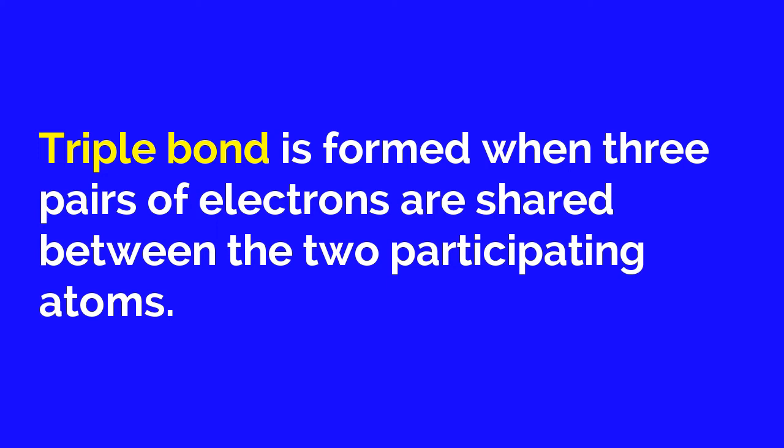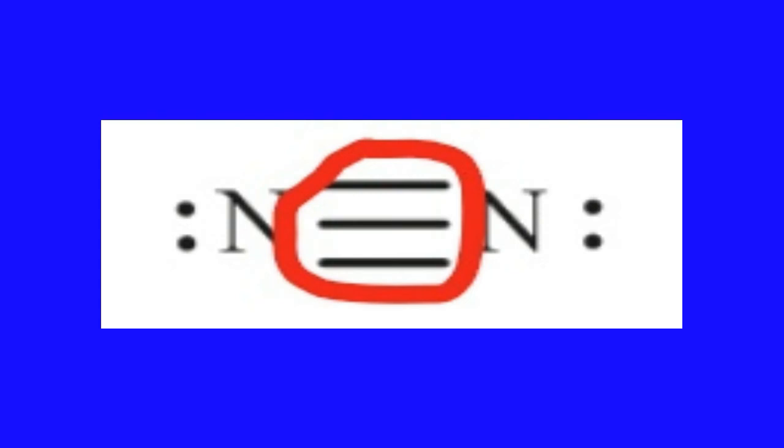A triple bond is formed when three pairs of electrons are shared between the two participating atoms. Triple covalent bonds are represented by three dashes and are the least stable types of covalent bonds. For example, in the formation of a nitrogen molecule, each nitrogen atom has five valence electrons and provides three electrons to form three electron pairs of sharing, thus a triple bond is formed between the two nitrogen atoms.